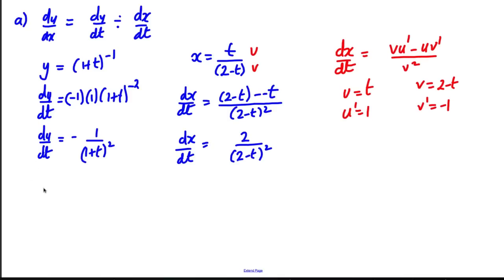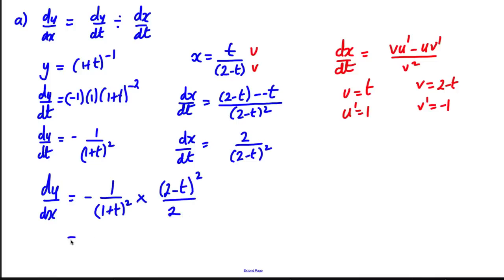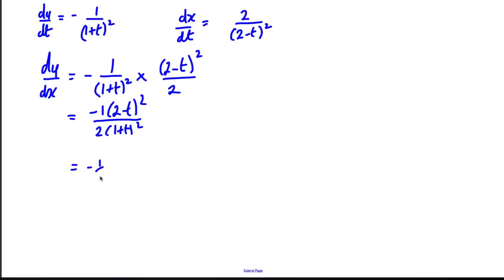Now we're going to use the chain rule, so dy by dx is therefore dy by dt, which is negative 1 over 1 plus t squared, divided by dx by dt, which is the same as multiplying by its reciprocal, 2 subtract t squared over 2. Tidying that up, we're going to get negative 1 times 2 subtract t squared over 2 times 1 plus t squared. And we can tidy it up, as in the question, as negative 1 half times 2 subtract t over 1 plus t, all squared. And we're done for dy by dx.